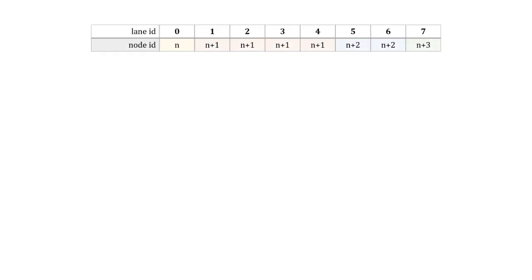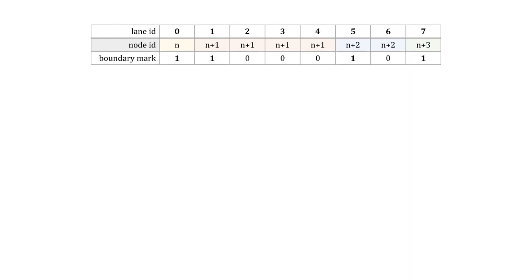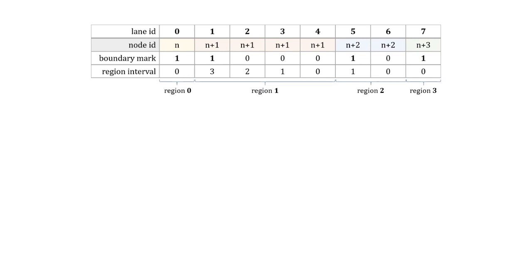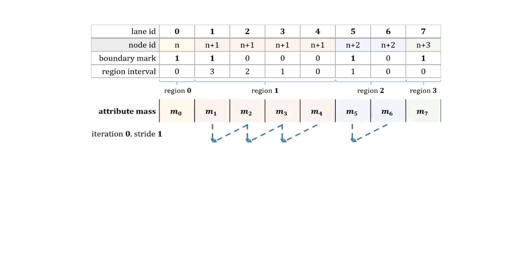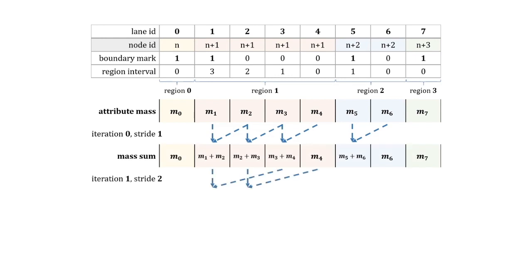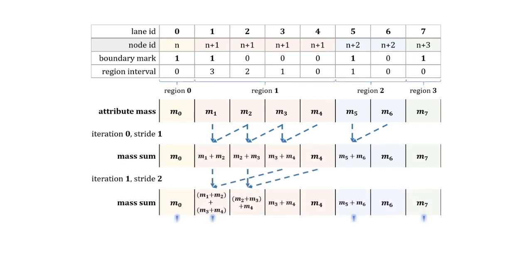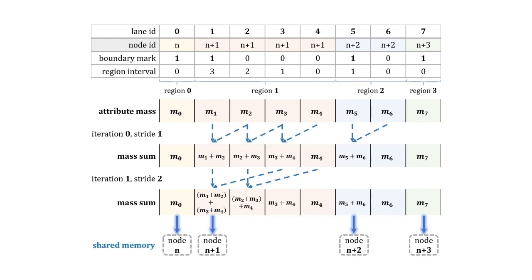We exploit modern warp-level CUDA intrinsics to resolve write hazards in the traditional scattering scheme. Assume we have 8 particles in a warp, and they are writing their weighted mass into nodes from node n to node n plus 3. We first mark all boundary particles whose neighboring particles are writing into a different node, and compute the corresponding interval for each of them. Then we iteratively shuffle the weighted mass from right to left, and finally boundary particles are responsible for writing the sum.